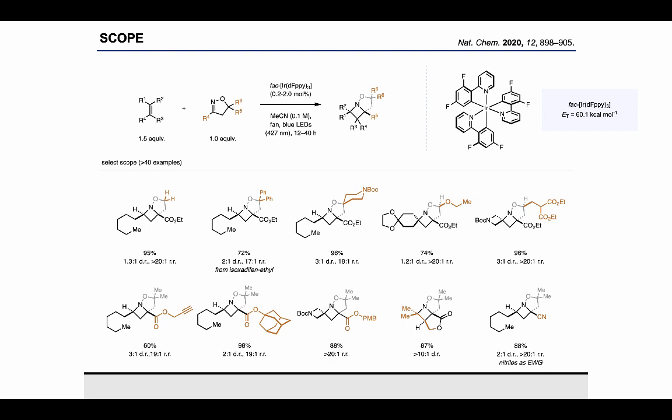But the successful cycloaddition reaction with a nitro-containing substrate on the bottom right hand side of the slide indicates that other functional groups other than esters can also be employed. It is important to highlight that these reactions proceed with excellent regio-selectivity and overall good diastereoselectivity, generally favoring the exo-diastereomer in which the alkene substituent is pointing away from the backbone of the substrate.